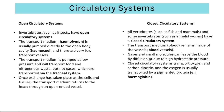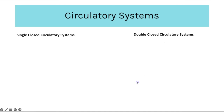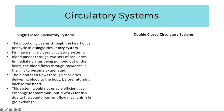The closed circulatory system transports oxygen and carbon dioxide, and oxygen is usually transported by a pigmented protein such as haemoglobin. In a single circulatory system the blood passes through the heart once per cycle and takes only one circuit — fish have single closed circulatory systems. Blood flows through capillaries in the gills to become oxygenated, then through capillaries delivering blood to the body before returning to the heart.